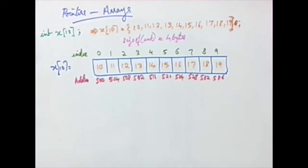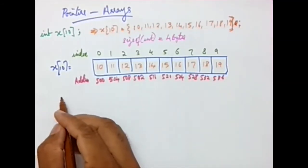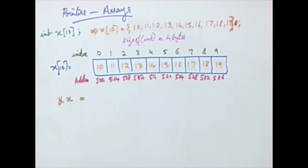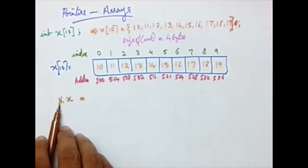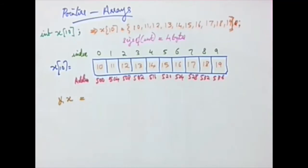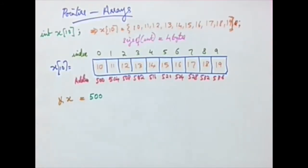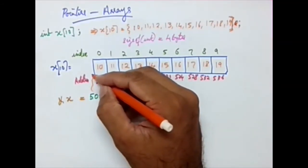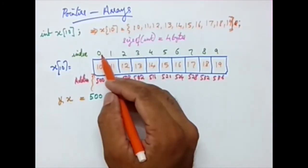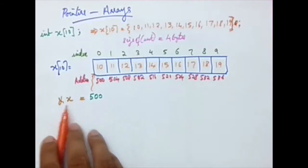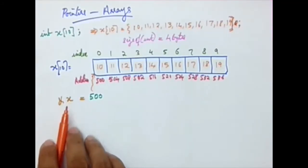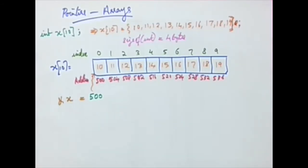Now we are going to talk about the pointer part. If I write a statement like &x, the ampersand is a referencing operator which gives us the address. This statement is going to give a value of 500, which is the memory location of the very first value in the array — the index position 0. This means that the name of the array is a pointer to the first value of the array.